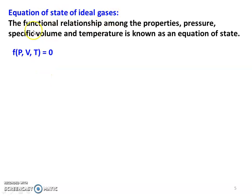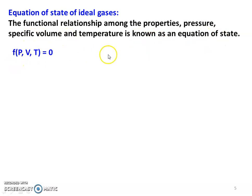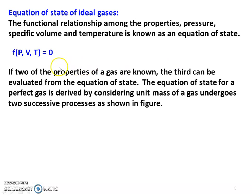Equation of state for ideal gases: if the functional relationship among the properties — pressure, specific volume, temperature — is known, it is called the equation of state. There are three fundamental thermodynamic properties: pressure, specific volume, and temperature. If two of the properties of a gas are known, the third can be evaluated from the equation of state.